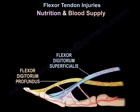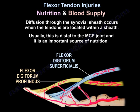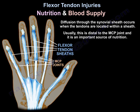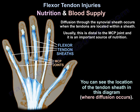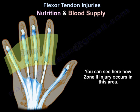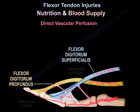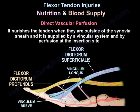Nutrition and blood supply: diffusion through the synovial sheath occurs when tendons are within a sheath — usually distal to the MCP joint — and is an important source of nutrition, as shown in the diagram. Direct vascular perfusion nourishes the tendon when it is outside the synovial sheath, supplied by a vincular system and by perfusion at the insertion site.